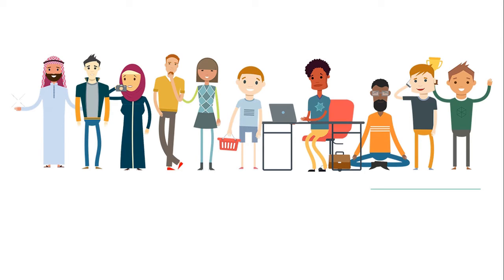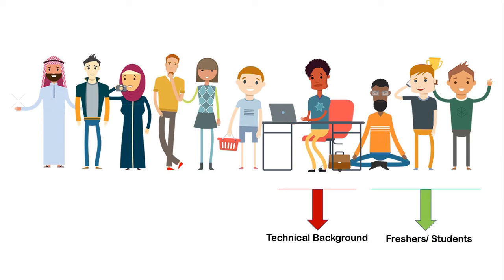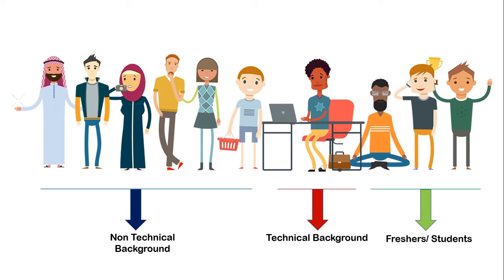Each batch is categorized into one of three types. The technical group comprises students and working professionals who can grasp concepts quickly and may have good coding experience. The semi-technical group comprises students and people who have maths experience or a little coding experience. The third group is completely non-technical students. This segregation exists because all students have different grasping power based on their experience and may take different time, and we want everyone to be comfortable with the teaching pace.